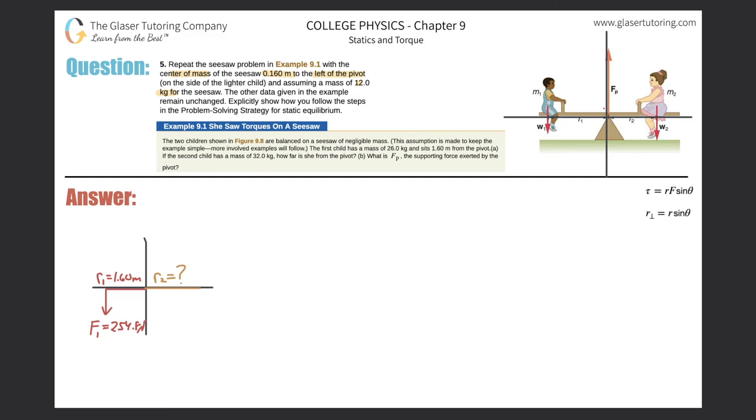She also has a certain mass, therefore she's applying a force. We'll call that F sub two. They told us that her mass is 32 kilograms according to the problem. So therefore, it's 32 times 9.8. So this is 313.6 newtons.